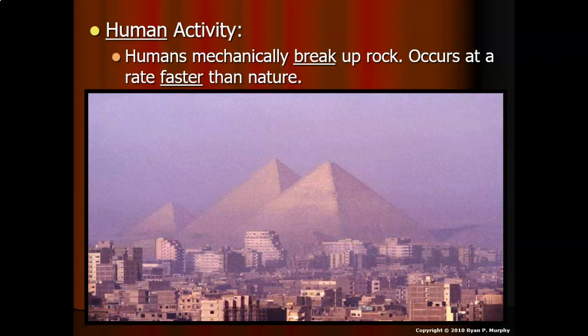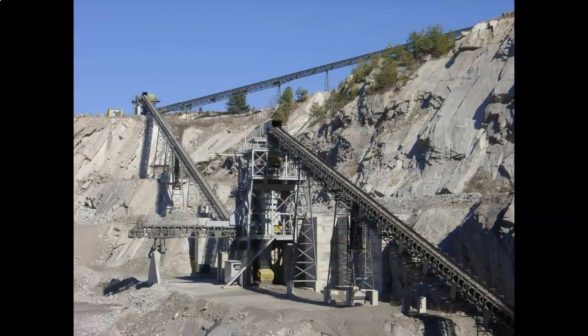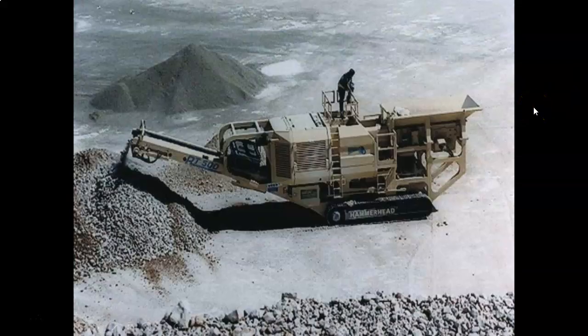Animals break up rocks by burrowing; humans break up rocks by all kinds of means, and we tend to do it a lot faster than most natural weathering. The pyramids of Egypt — the stone that makes them up did not get that way naturally; the rocks were broken into the right size pieces. Stonehenge in England is also a result of human activity, as are mines, gravestones, monuments, and carved stone.